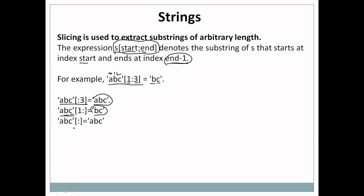It is also possible to create a substring without specifying both start and end, like 'abc'[:]. In that case it will simply return a copy of the complete string — output is 'abc'. This is how you can perform slicing or substring operations on a string in Python.